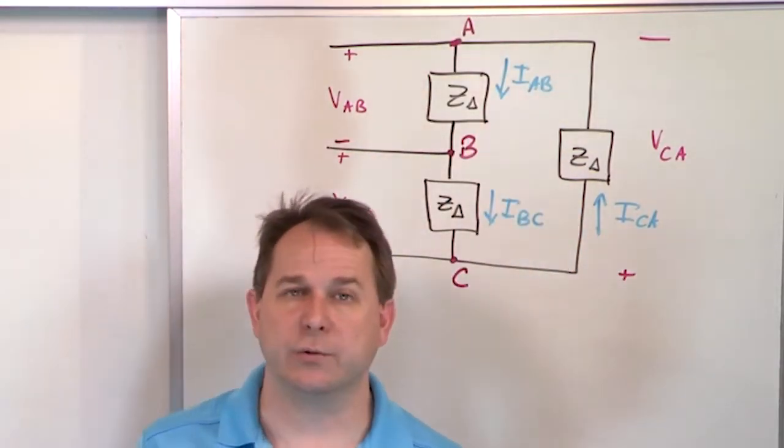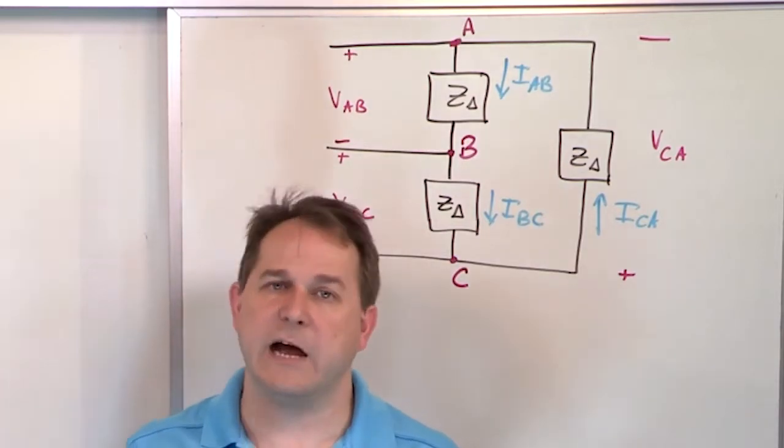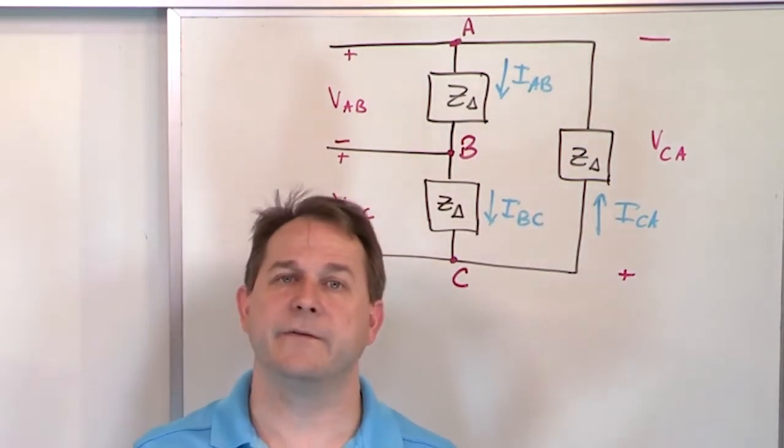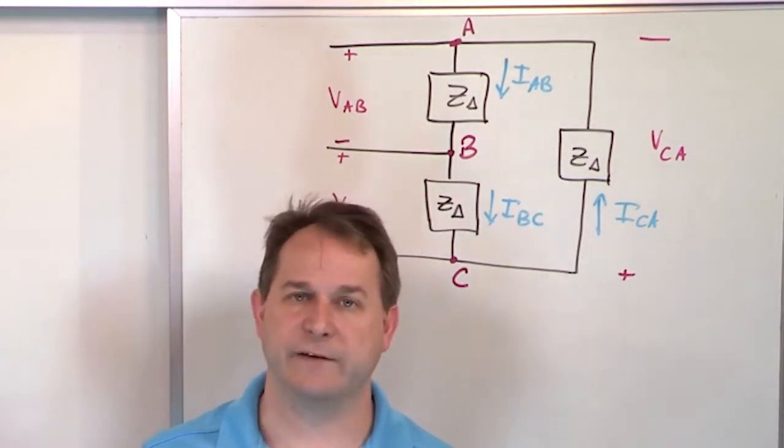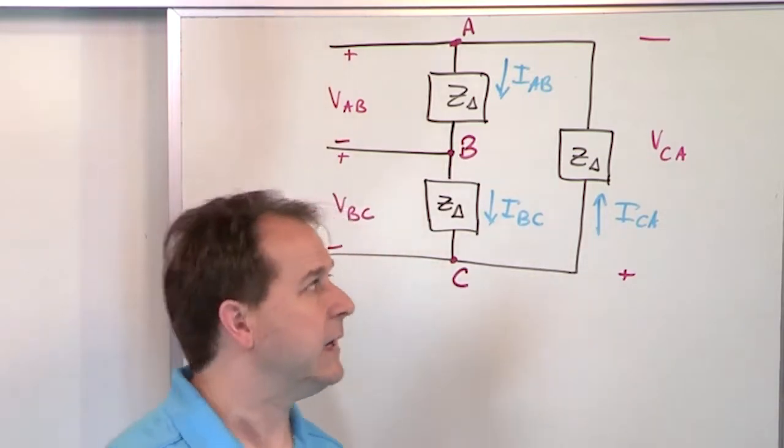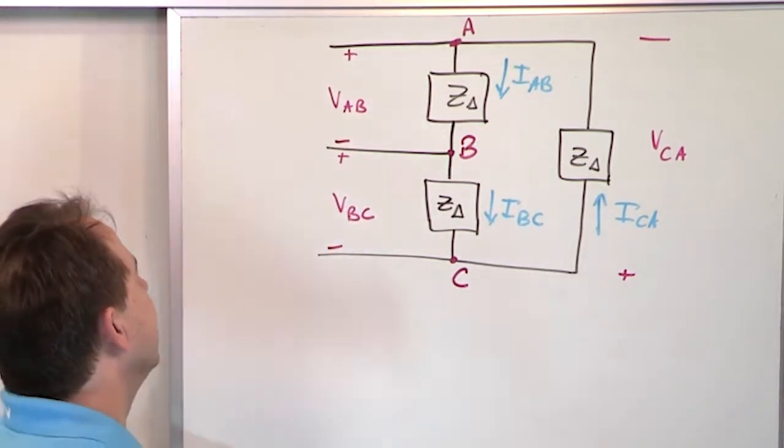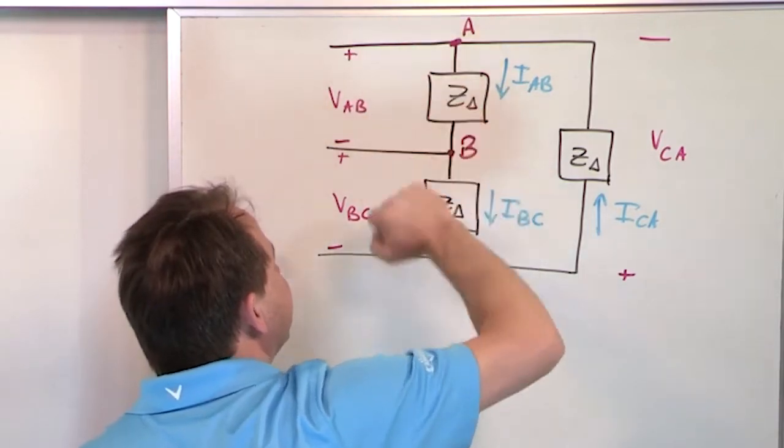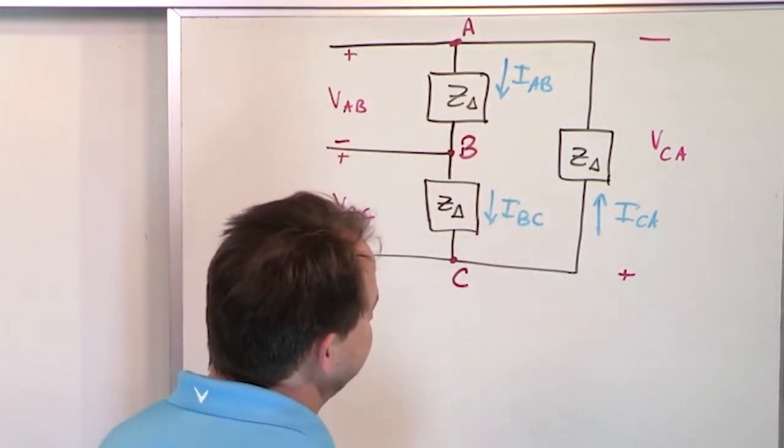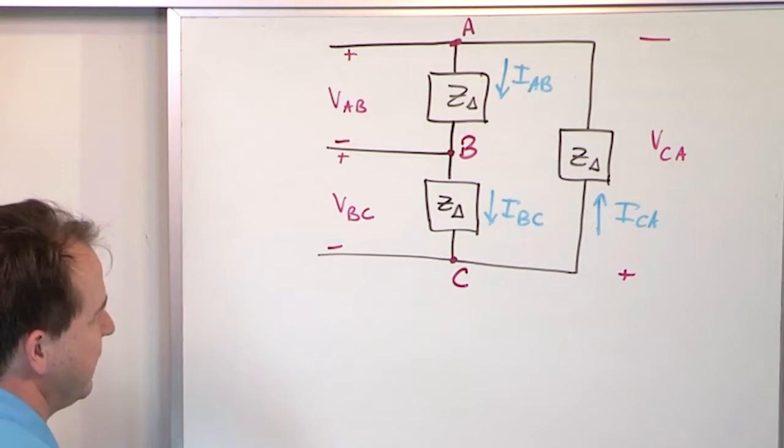So for the Y-load, the currents were the same, line current and phase current were the same, but the voltages were different. Line voltage and phase voltage were different, so they required a shift. The symmetrical case is true here. The voltage is the same. Line voltage and phase voltage are the same, but the currents are actually the thing that needs to be shifted, and that's why we've been using it all this time.